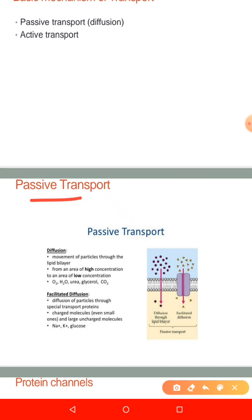Up the hill we have high potential energy; down the hill we have low potential energy. So the vehicle moves from a region of high potential energy to a region of low potential energy. That's the definition of passive transport: substances move from a region where they are in high concentration to a region where they are in low concentration, along the concentration gradient.